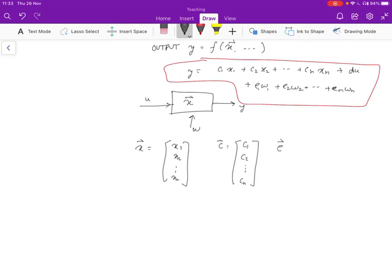Similarly define W. Then we can write Y, the vector Y is given as C transpose X, the vector X, plus DU, because U is a scalar, plus E transpose W, the vector W.